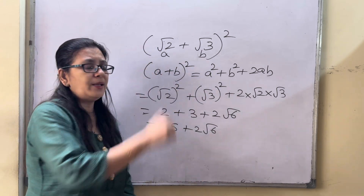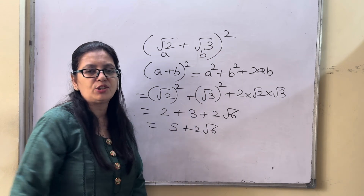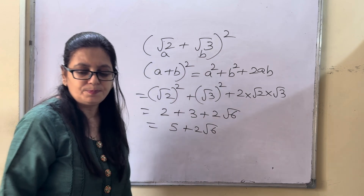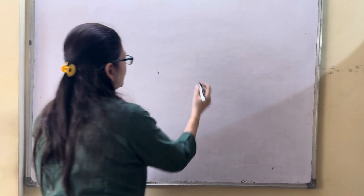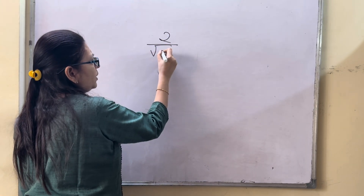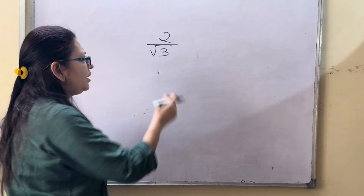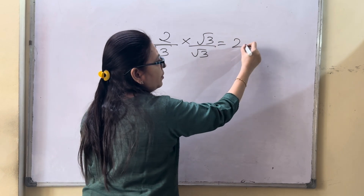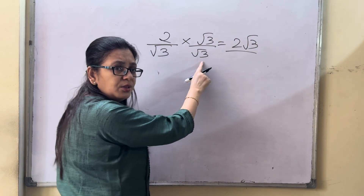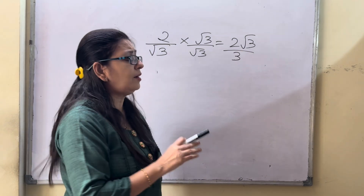If a question asks whether 5 plus 2 root 6 is rational or irrational: a sum of a rational and an irrational number is always an irrational number. Also, to rationalize a denominator — say 2 over root 3 — multiply by root 3 over root 3. This gives 2 root 3 over 3. The product of a rational number and an irrational number is an irrational number.